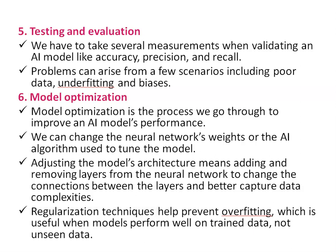Step six is model optimization — the process of improving an AI model's performance. We can change the neural network's weights or the AI algorithm used to tune the model. Adjusting the model's architecture means adding and removing layers from the neural network to change connections between layers. Regularization techniques help prevent overfitting, which occurs when models perform well on trained data but not on unseen data.